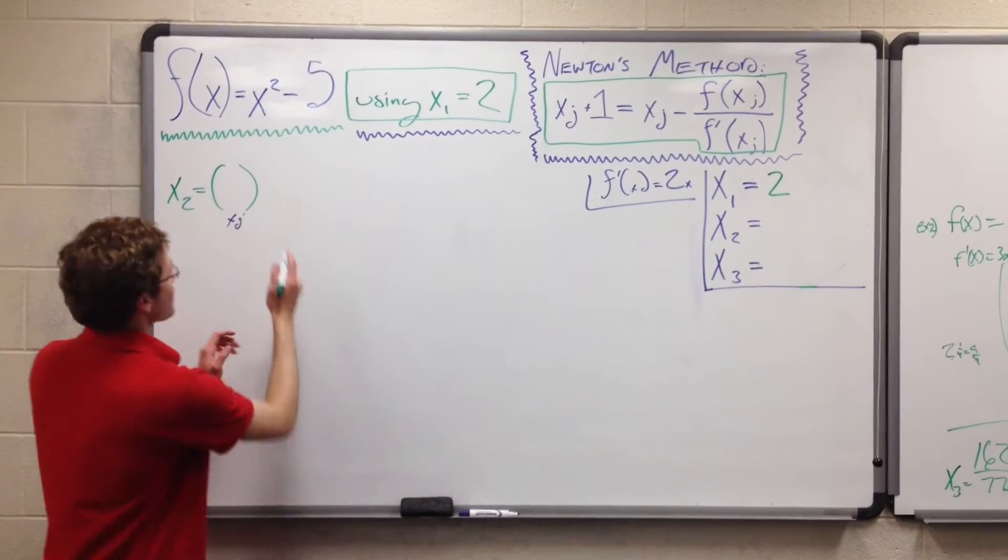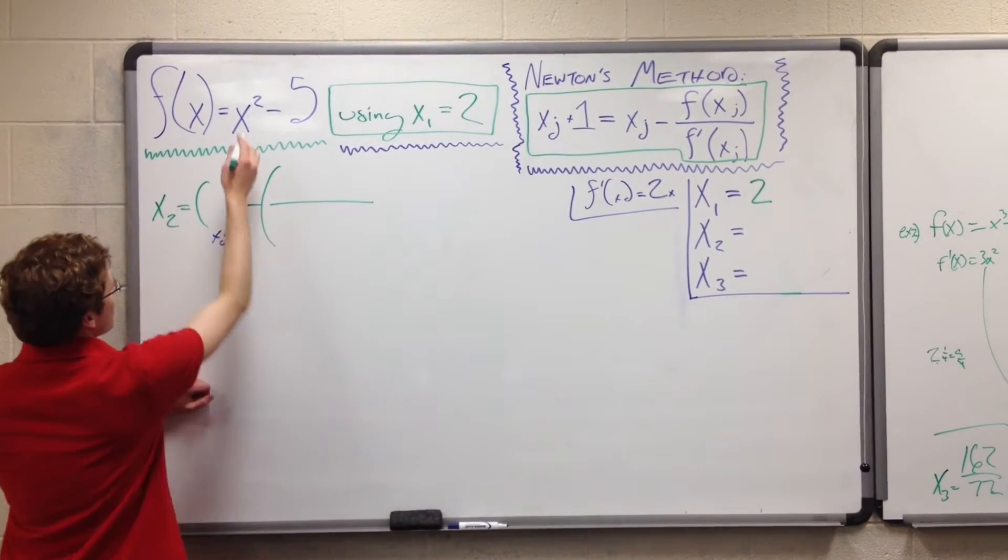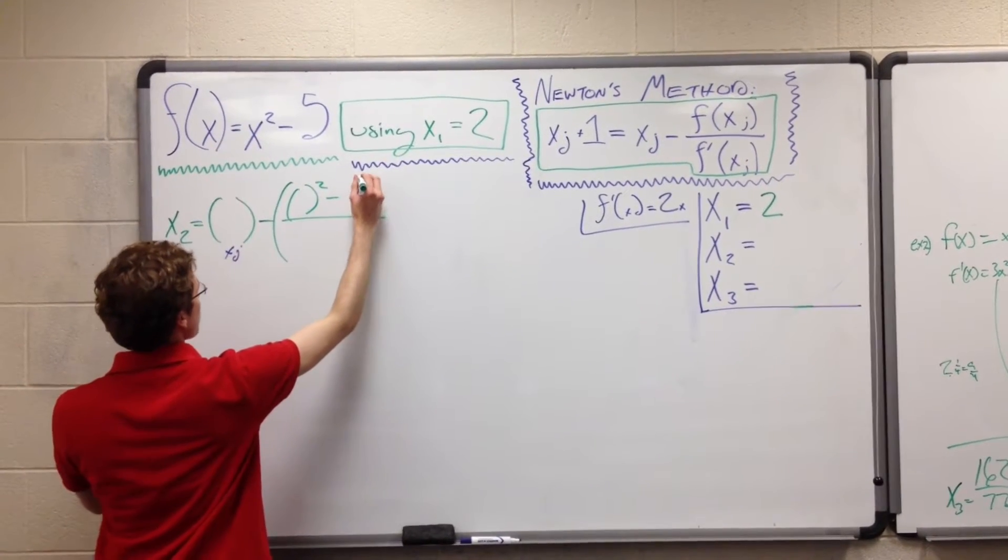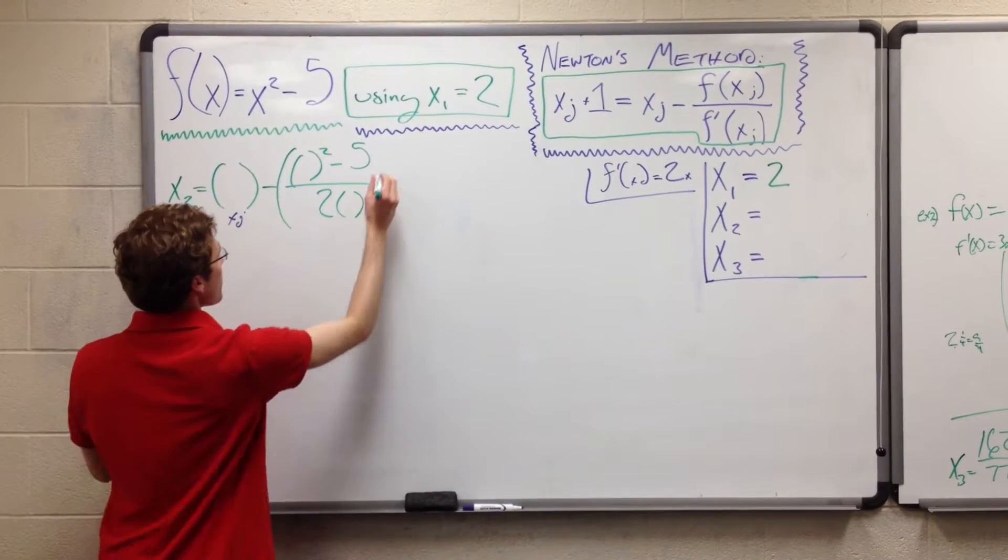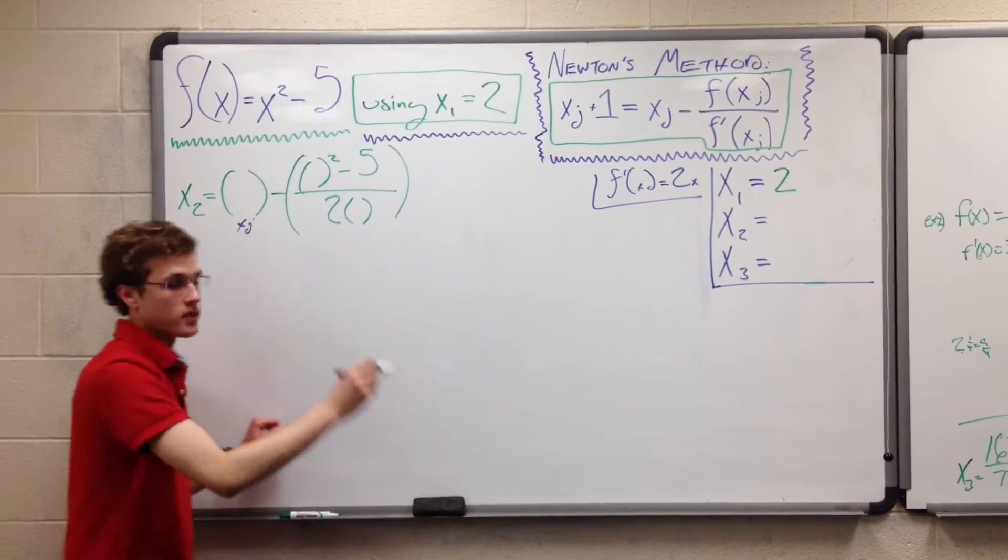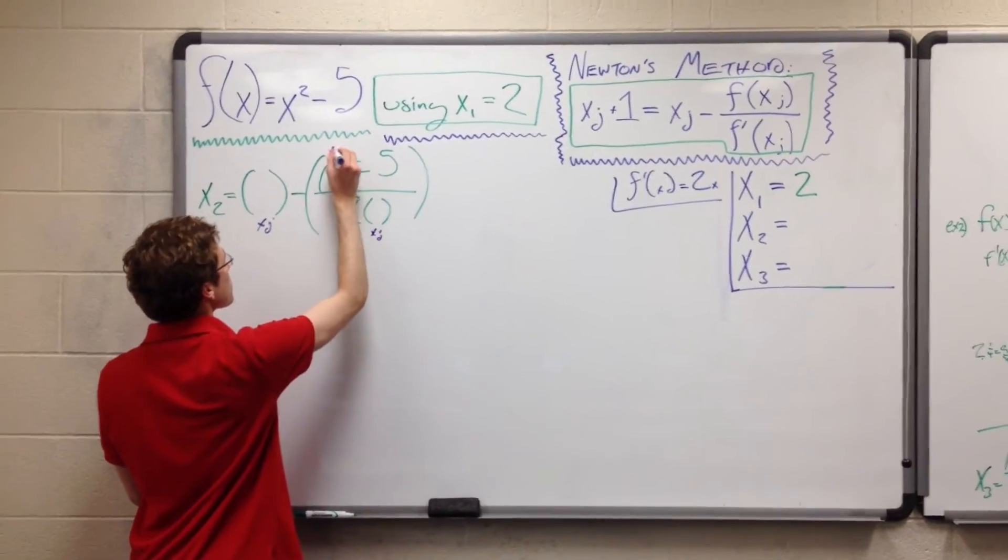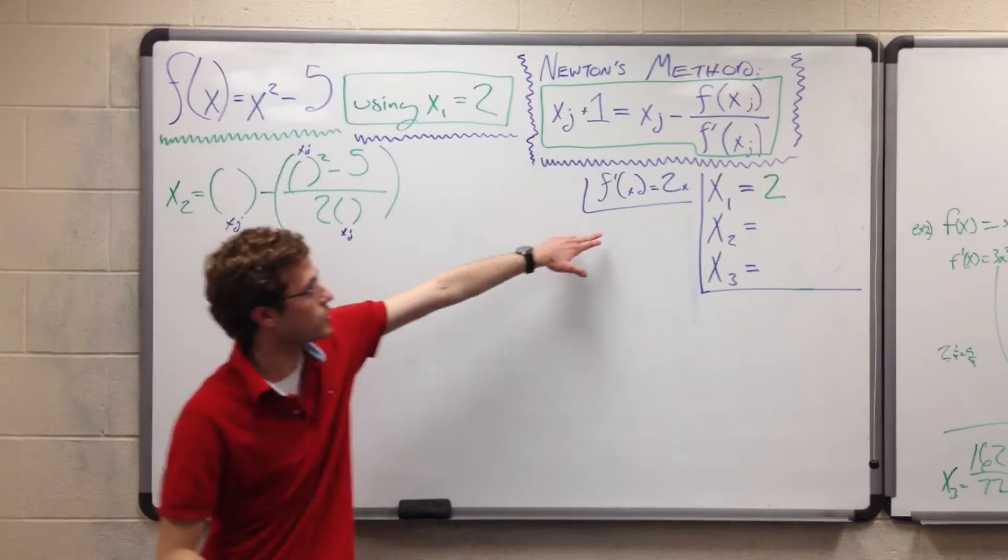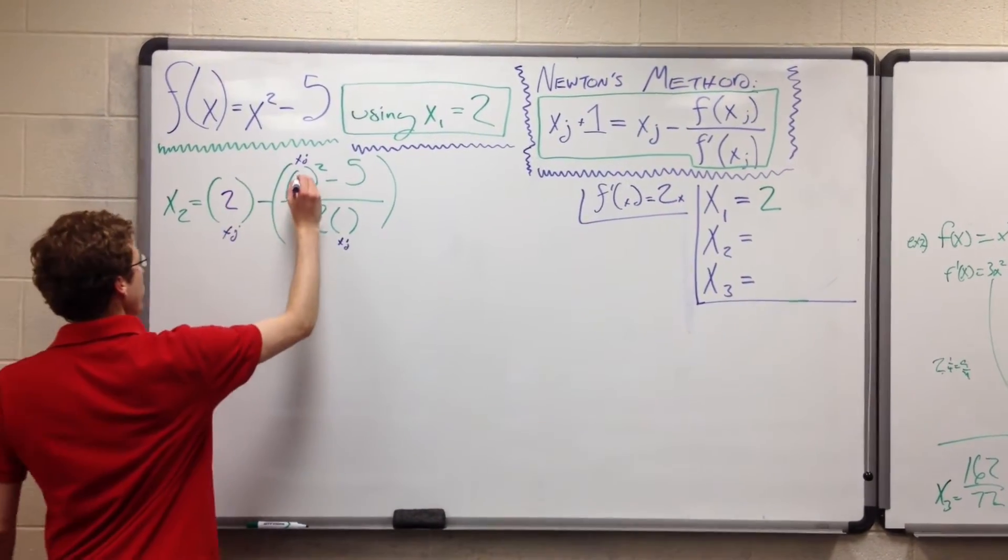So xᵢ minus f(xᵢ), the original function x² - 5, over the derivative, 2x. Where I've written these parentheses, we did the exact same thing. This is where our xᵢ is going to go. Our xᵢ, as we know, is x₁, so x₁ = 2, so we're going to put a 2 in each of these.